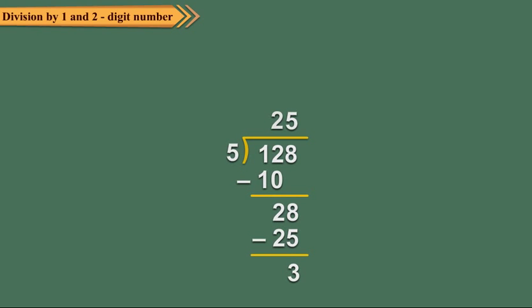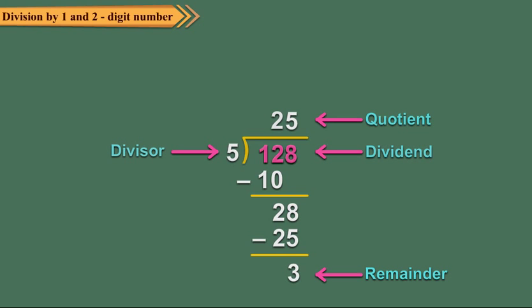In a division sum, the number to be divided is called the dividend. The number by which we divide is called the divisor. The answer is called the quotient. The number which remains undivided is called the remainder. So if we divide 128 by 5, we get 25 as the quotient and 3 as the remainder. Here 128 is the dividend and 5 is the divisor.